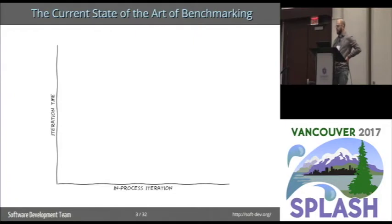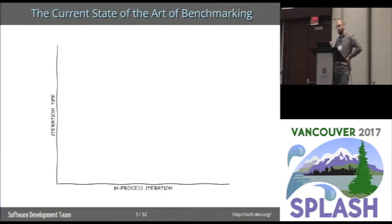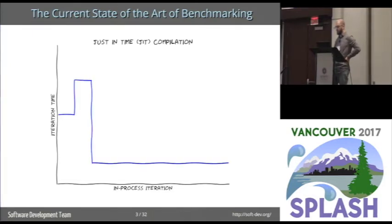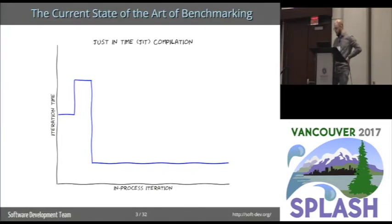Having done that, we can make what's called a run sequence plot. A run sequence plot has, on the x-axis, the in-process iteration number, and on the y-axis, the corresponding iteration times. Now, because we have a just-in-time compiler, we don't expect to see constant performance over time. Perhaps we'd expect to see something more like this.